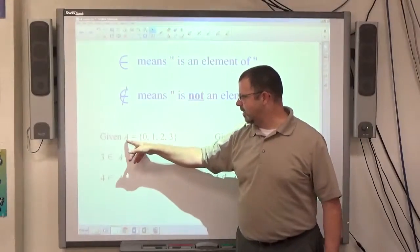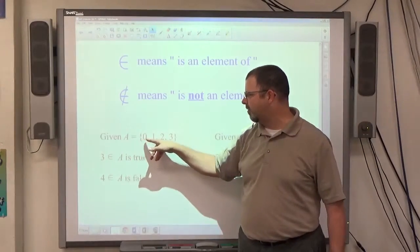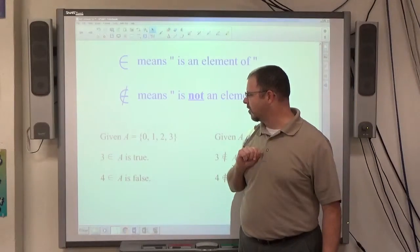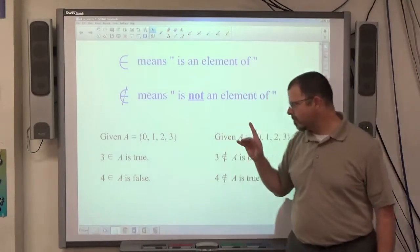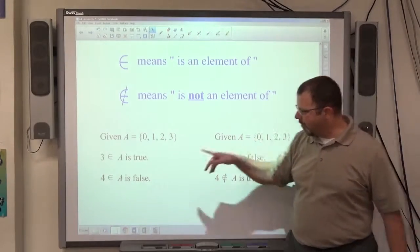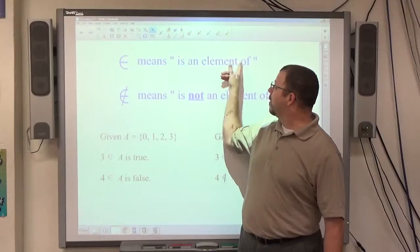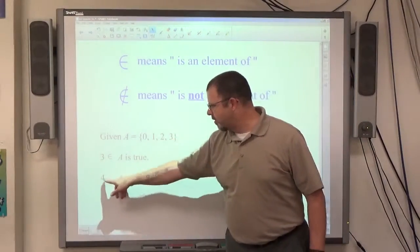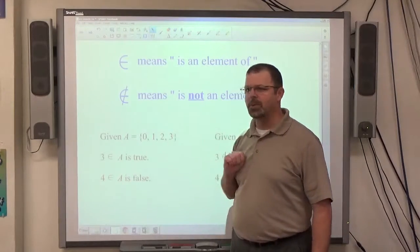And if you're given a set, in this case, A is the set of 0, 1, 2, and 3. You see how you set braces there to set the set off? If we're dealing with an is an element of statement, 3 is an element of A because 3 is in A. 4 is an element of A, false, because 4 is not.